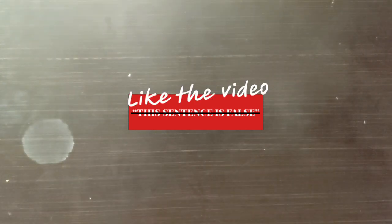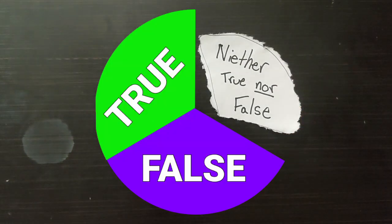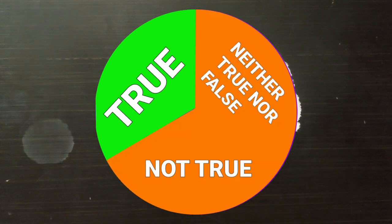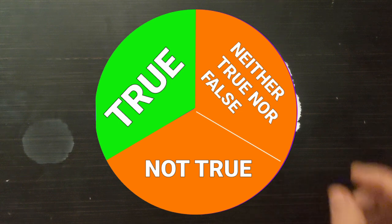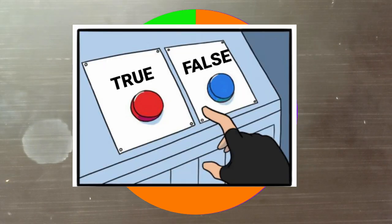Let's say instead, like the video. Oh wait, that's the wrong phrase. Here it is. This sentence is not true. This presents a problem. Where before we had three separate categories, we now have taken our third category and lumped it back in with the false answer. Neither true nor false is just another way of saying not true, and we're right back where we started with only two options.